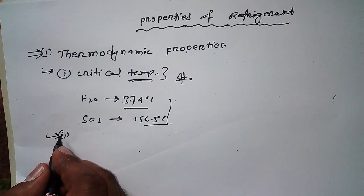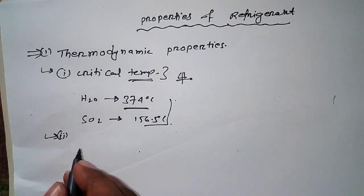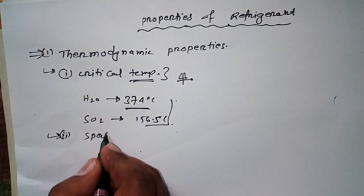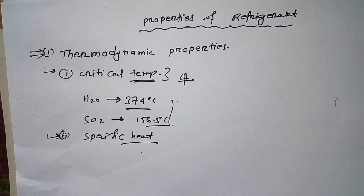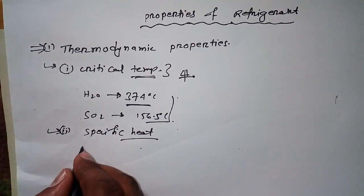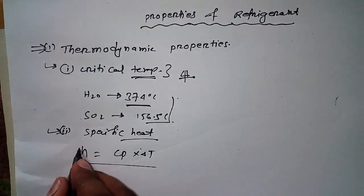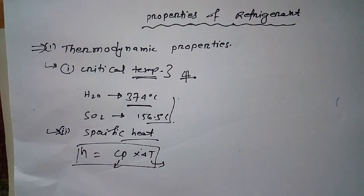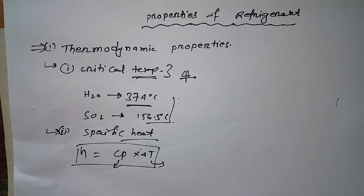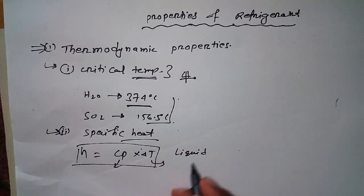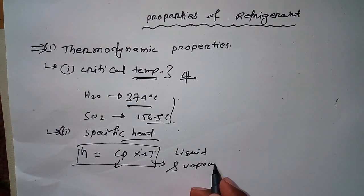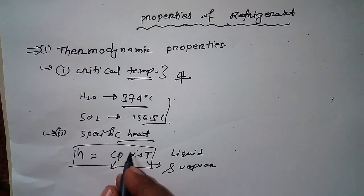Now let's move to the next property — specific heat. We know that h = cp × ΔT, where h is enthalpy, cp is specific heat, and ΔT is the change in temperature (final minus initial). In the case of a refrigerant, we have two states to consider: the liquid state and the vapor state.